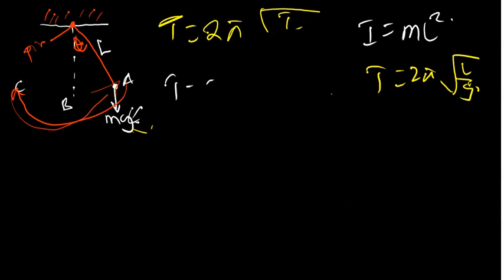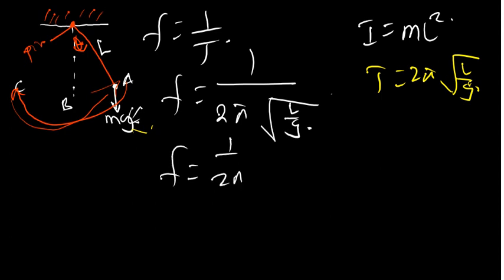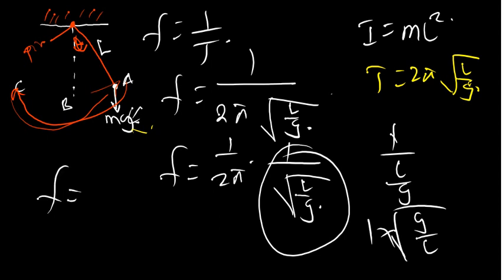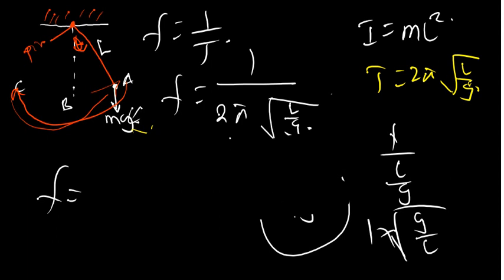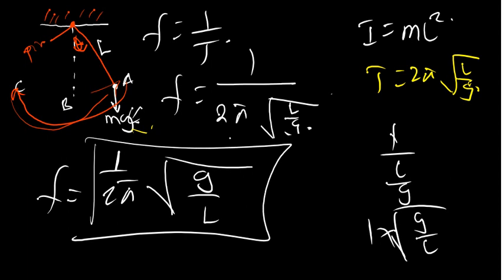Now let's find the formula for frequency. We know that frequency is 1 over the period, so we can say it's 1 over 2 pi times the square root of L over G. Rearranging, this is the same as 1 over 2 pi times 1 over the square root of L over G, which simplifies to 1 over 2 pi times the square root of G over L. So the frequency is equal to 1 over 2 pi times the square root of G over L.